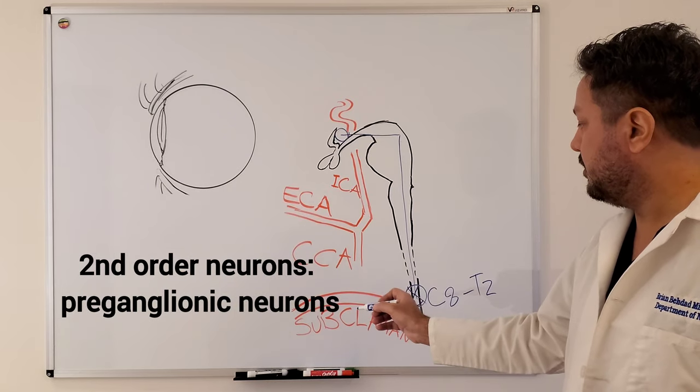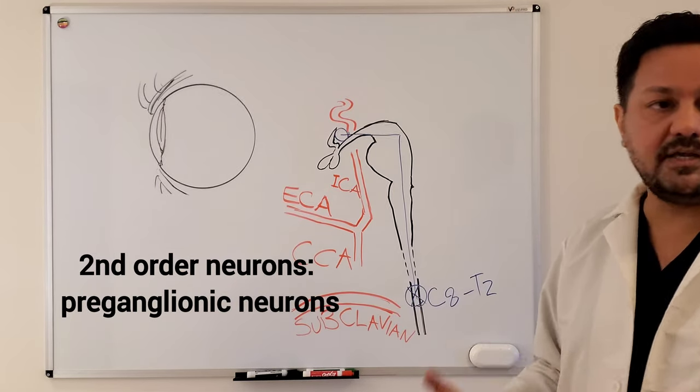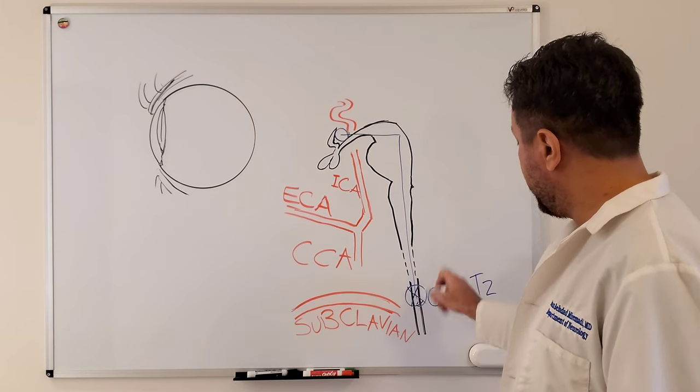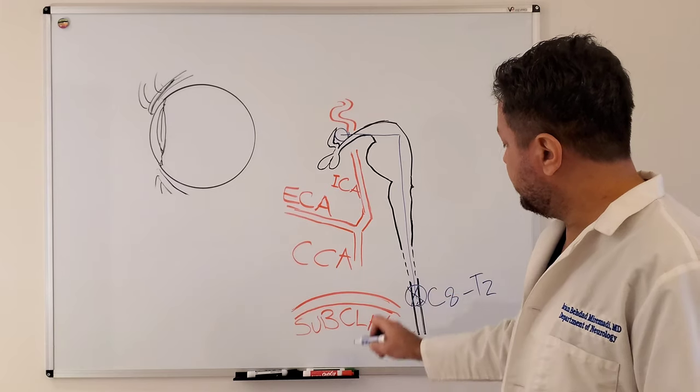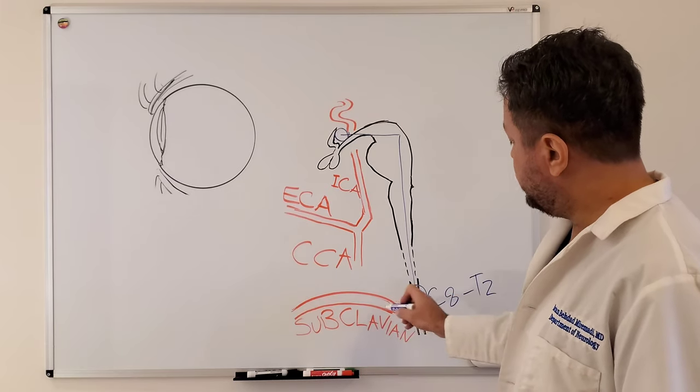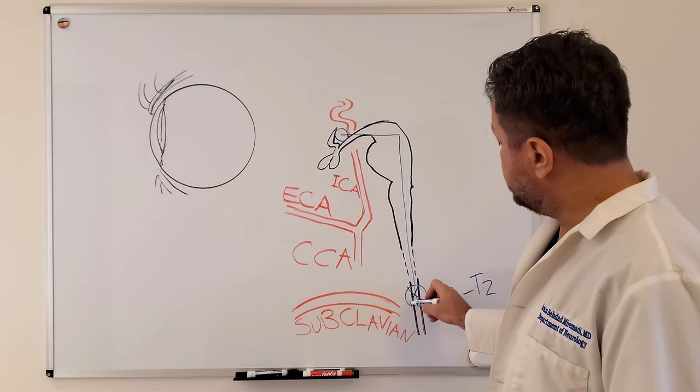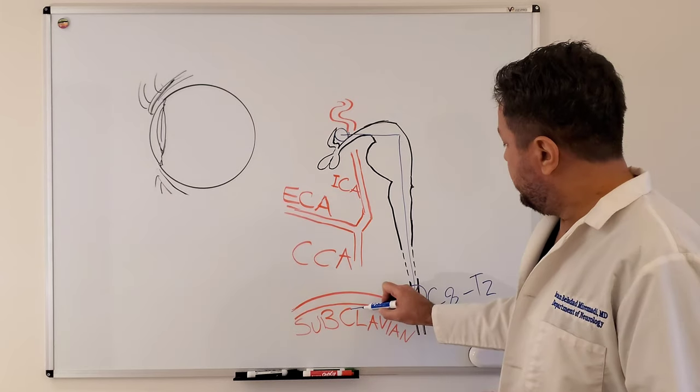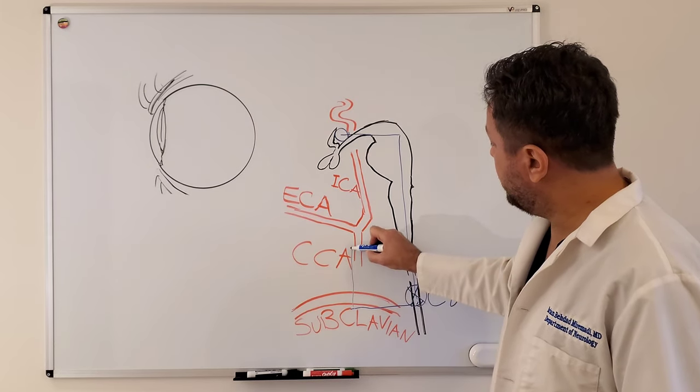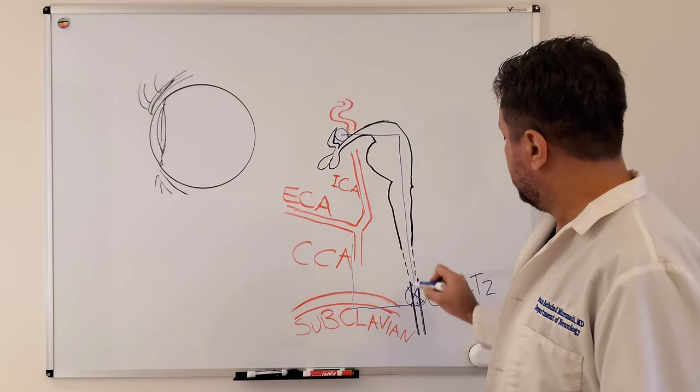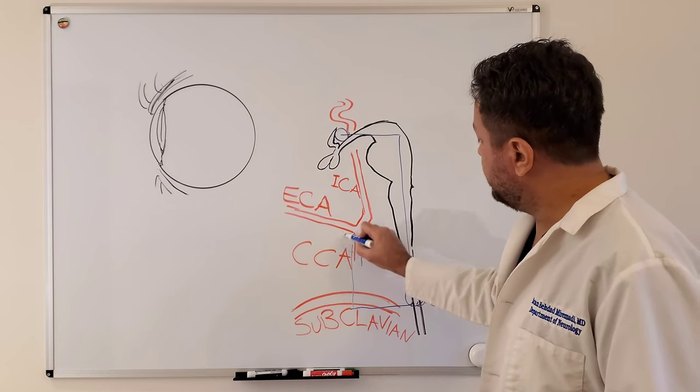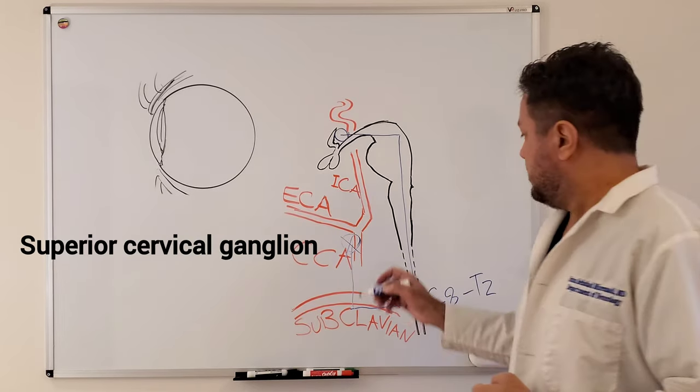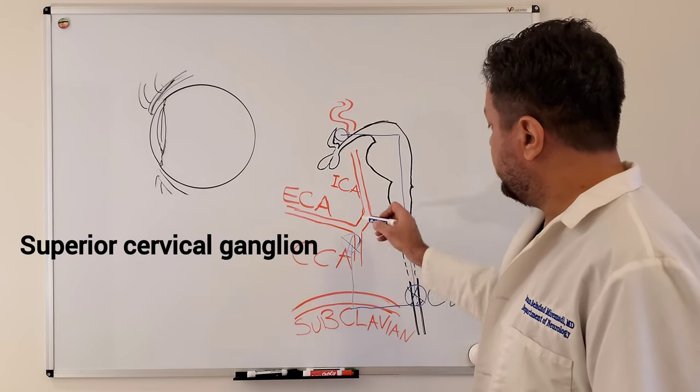And then from here we can look at the second order neuron, which is also called the preganglionic neuron. The neurons will separate from the spinal cord, they will travel along the lung or the apices of the lung over the mediastinum and underneath the subclavian artery, and then they will run up and they will form their second synapse here at the level of the superior cervical ganglion.